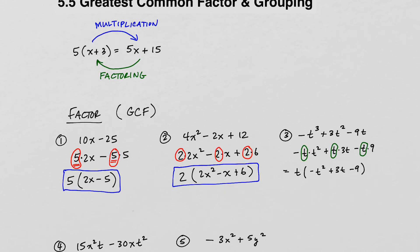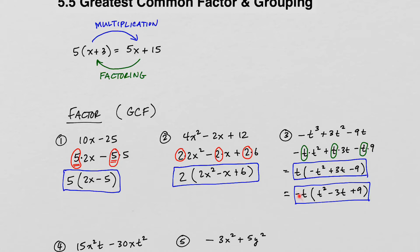This answer is correct; however, it's not the best way to write it, because we still have a leading negative inside the parentheses. Instead of just factoring out t, we could factor out negative t. If we do that, we get negative t times the quantity t squared minus 3t plus 9. Pulling out the negative changes all the signs inside to the opposite. Both answers are correct, but the second is better. So anytime you can factor out a leading negative coefficient, you should always aim to do that.